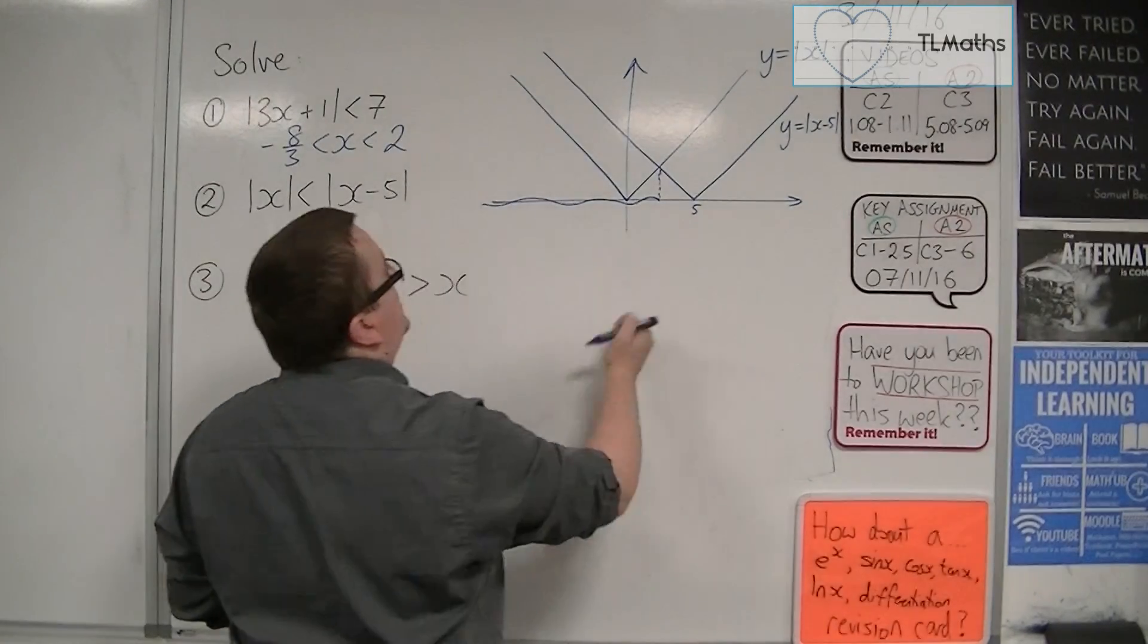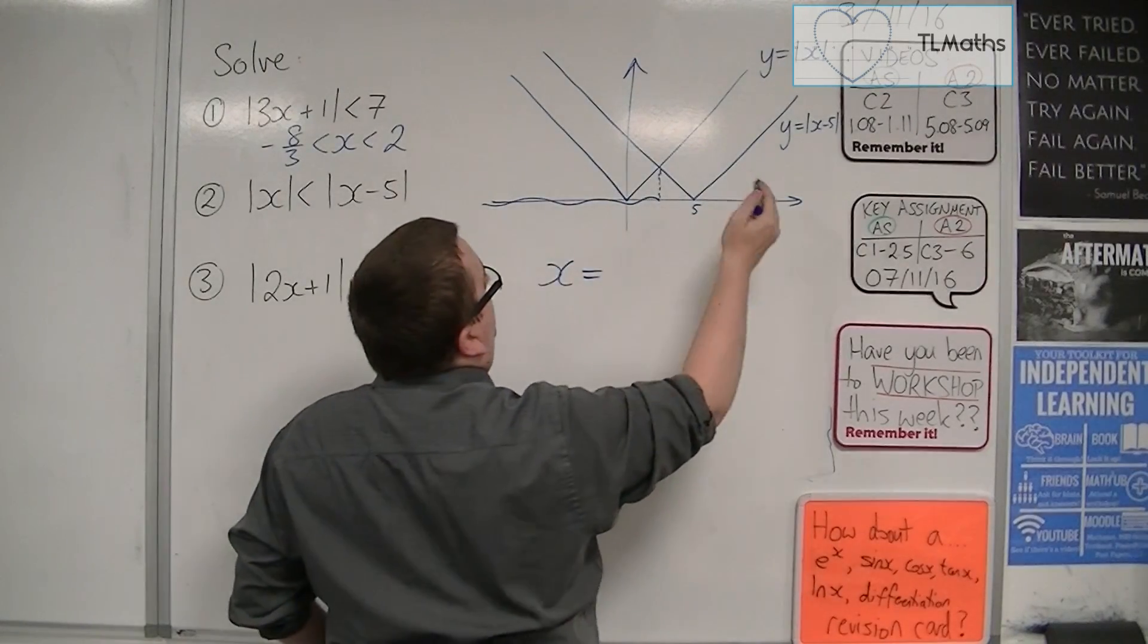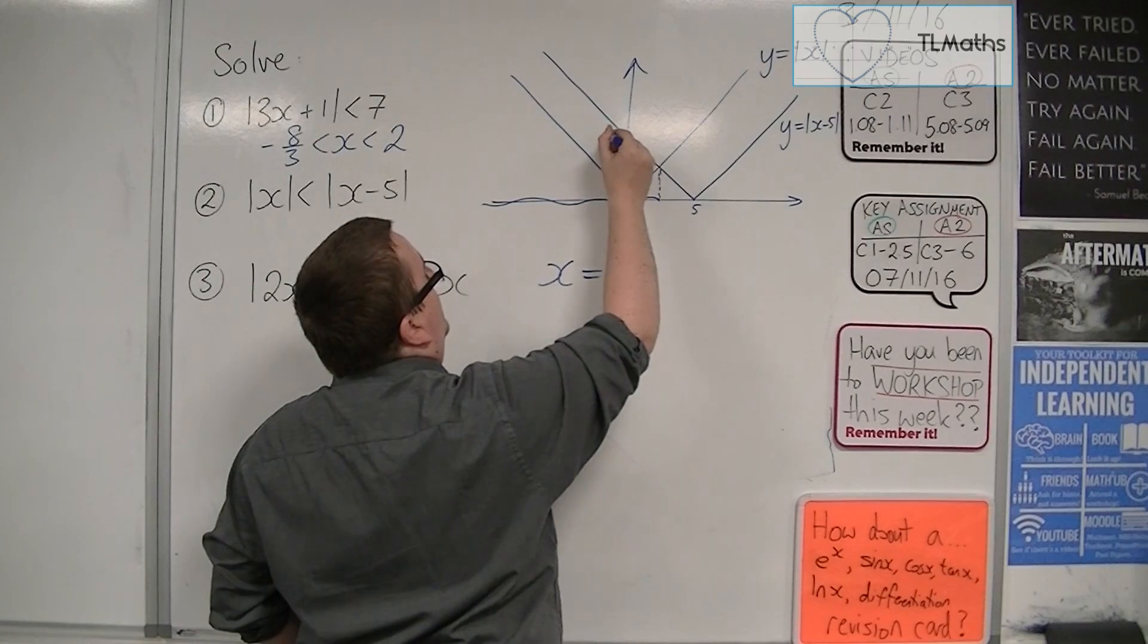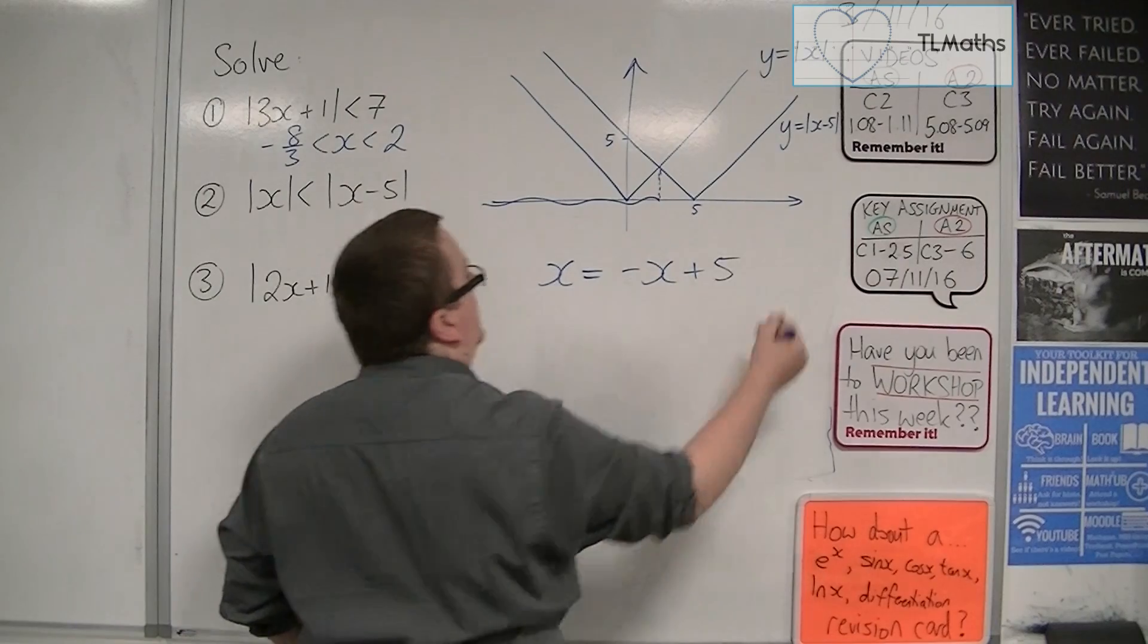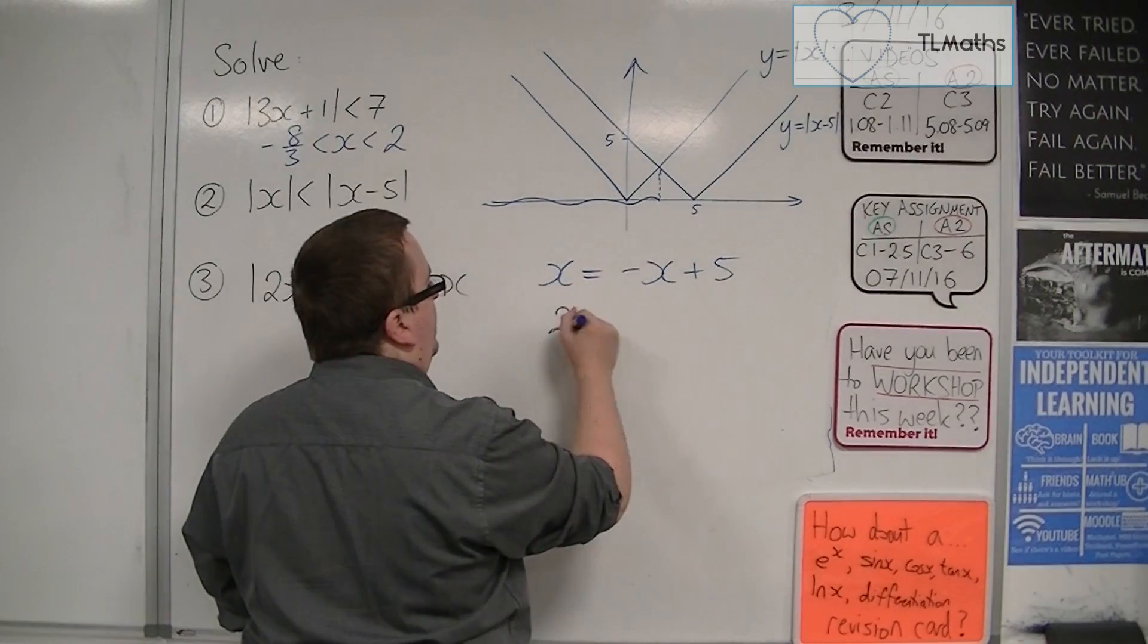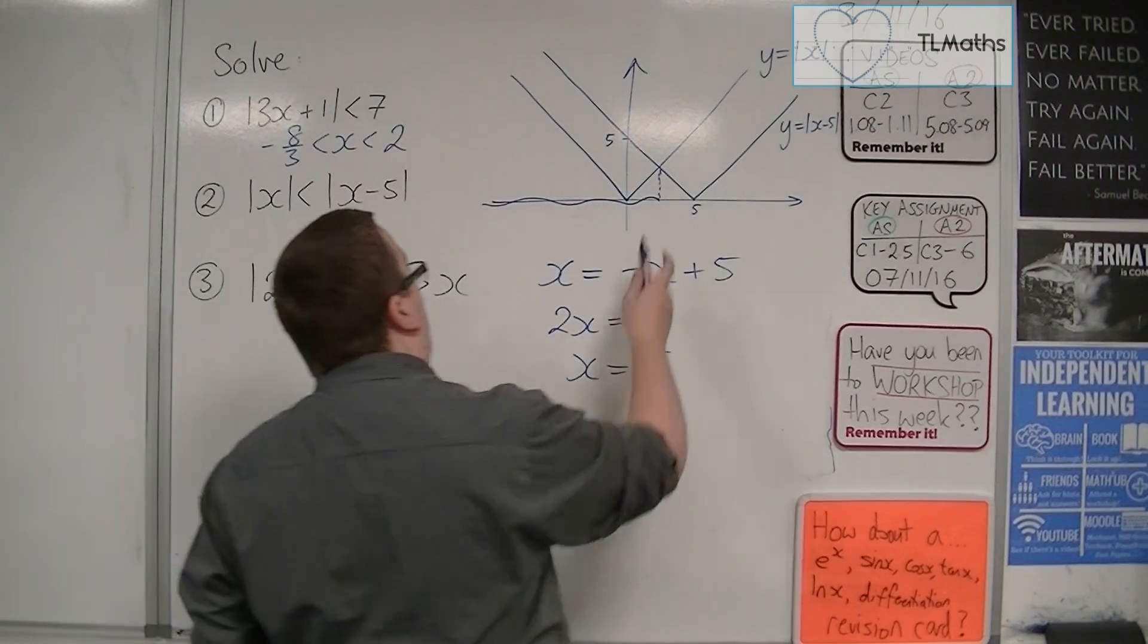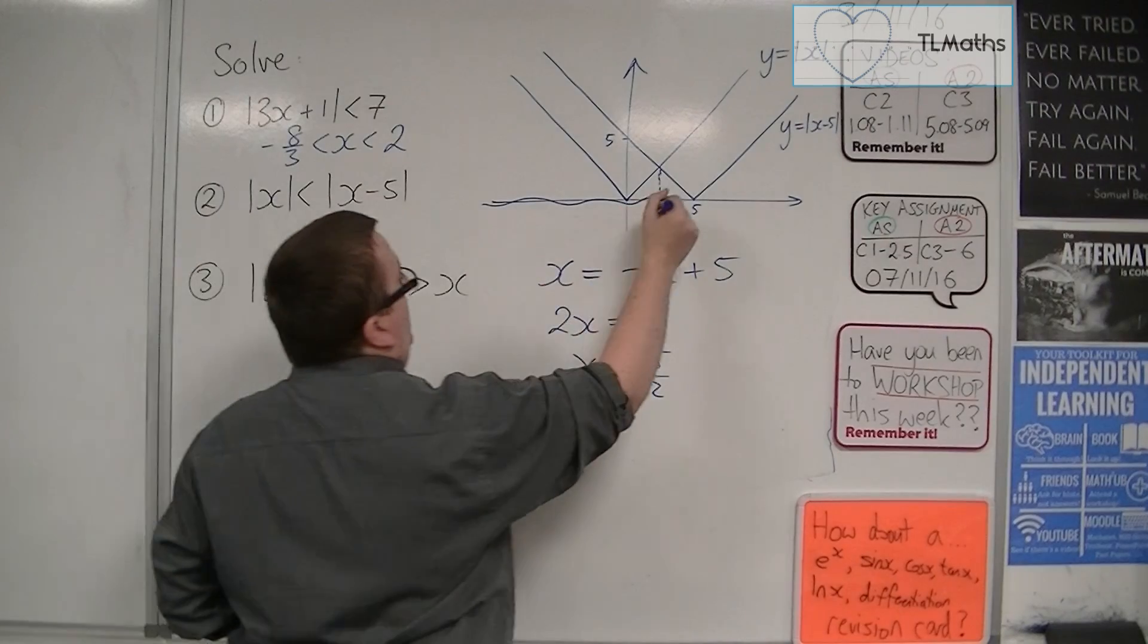So I just need to put x, because that's the line y equals x, equal to this line, which is minus x plus 5. Because that would be 5. And we'd be going down like 5 minus x, or minus x plus 5. Add the x to both sides and divide both sides by 2. And of course, it's going to be 5 halves. And it really should be, because it should be halfway between the 0 and 5.